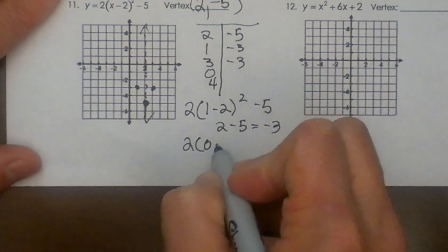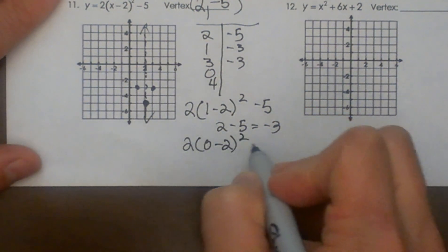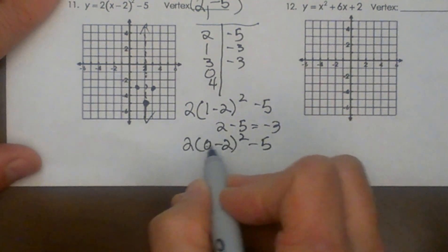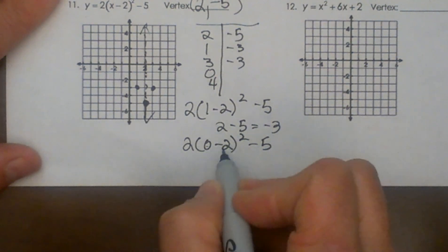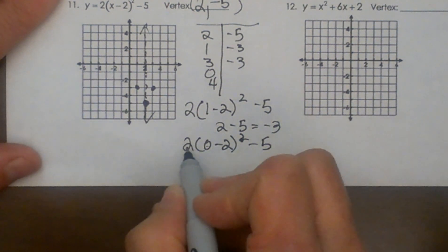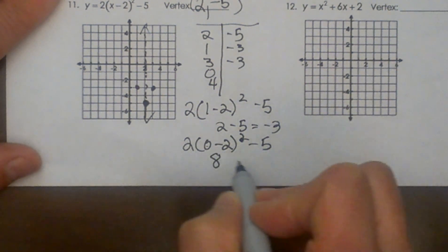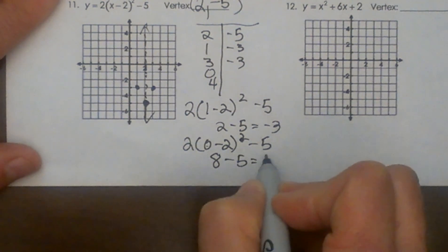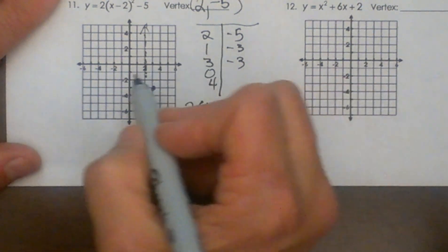Let's take 2 times 0 minus 2 squared minus 5. 0 minus 2 is negative 2. Squared is 4. So 2 times 4 is 8. 8 minus 5 is 3. So that's going to give me 0, 3.